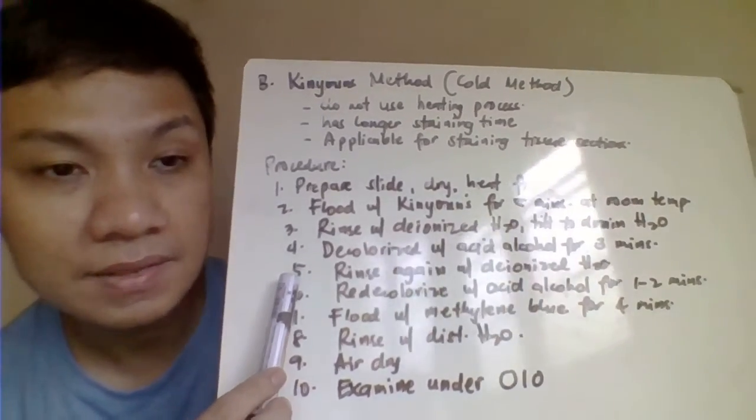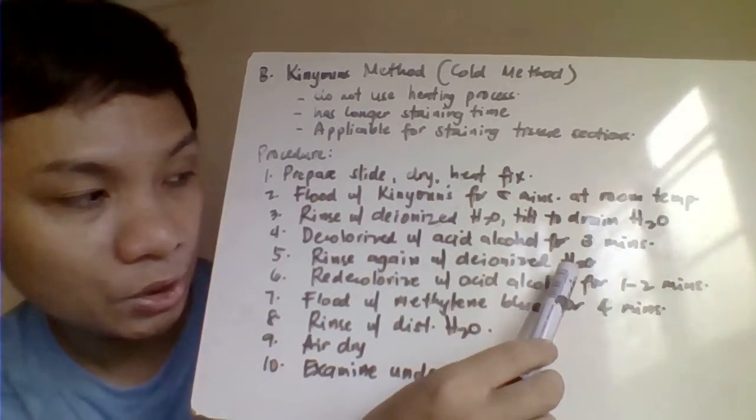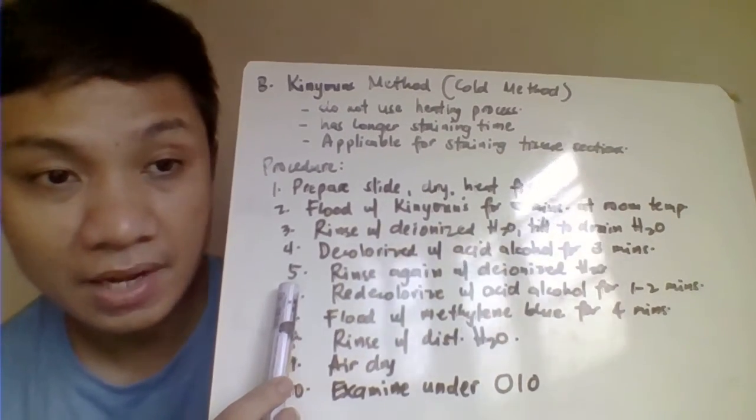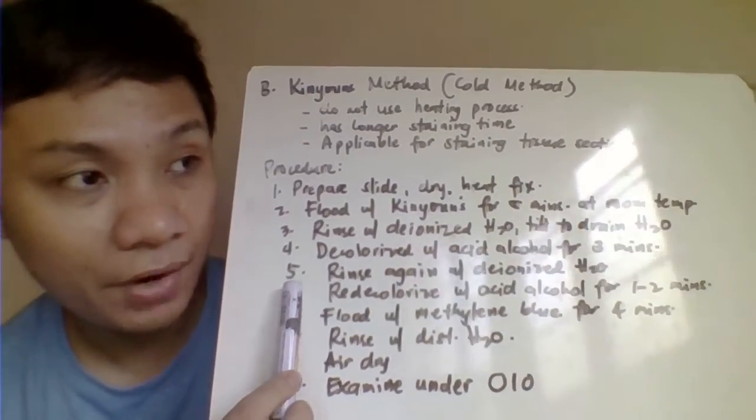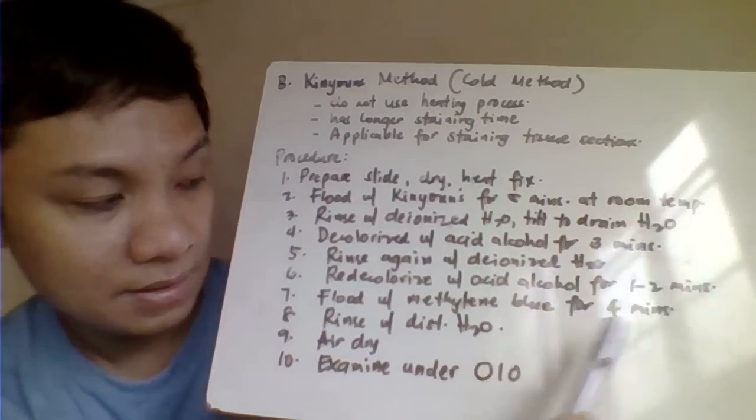And after that one, you rinse again here with your deionized water. Then re-decolorize. Apply again your acid alcohol for 1 to 2 minutes.